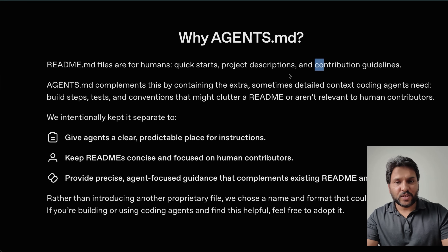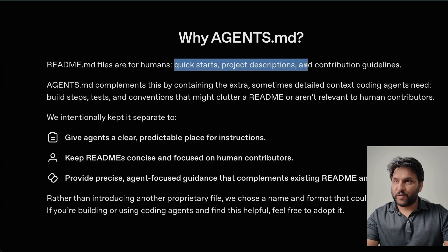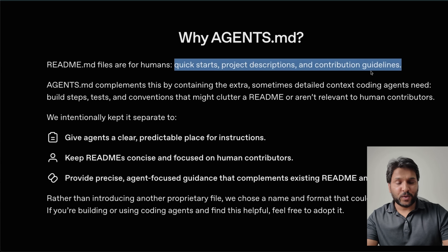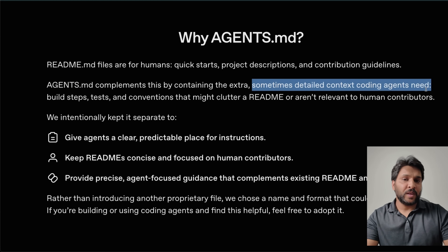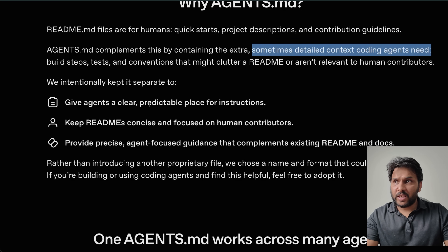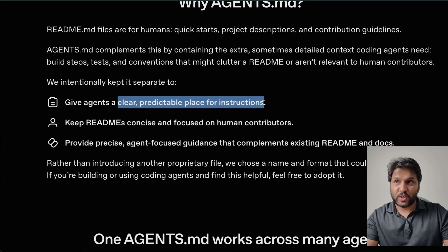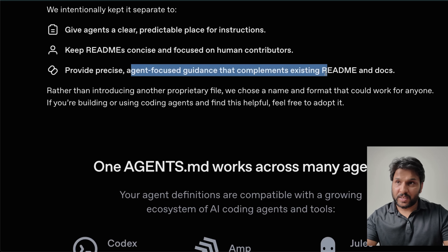So what exactly is agents.md? READMEs were designed for humans — they give you a quick start guide for the project, what's in it, and how you contribute. Agents.md is specifically designed to provide context to your coding agents. This includes steps like how to build a project, what type of tests to run, specific coding formats you want the agents to follow, or any security concerns you want the agents to look at. It's a way to provide clear, predictable instructions to your agent, kept separate from READMEs for humans.